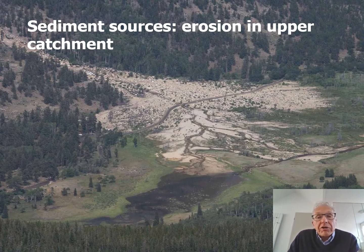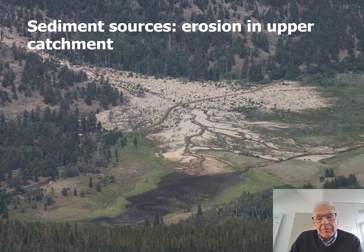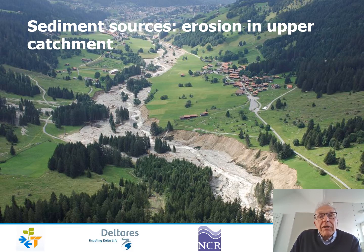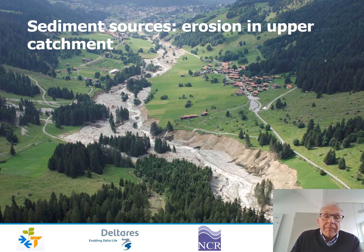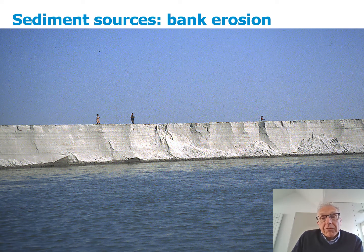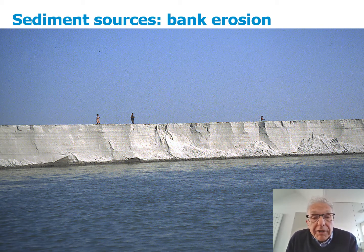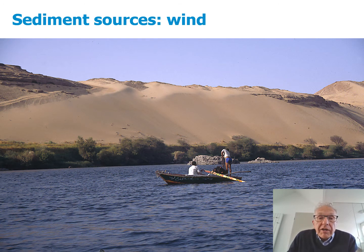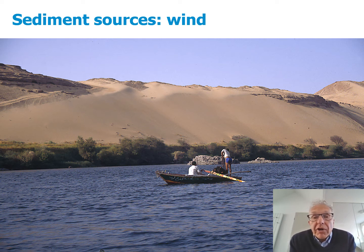Sediment sources are in the upper parts of the catchment due to erosion, mass wasting, mountain slopes, and landslides where material ends up in the river. Rivers in the highlands also incise and generate sediment for transport downstream. Further downstream, sediment enters the river by bank erosion — like an eroding island in the river Brahmaputra in Bangladesh. Sand can even come in by the wind, as seen along the river Nile at the first cataract, where the surrounding desert is a source of material for the river.